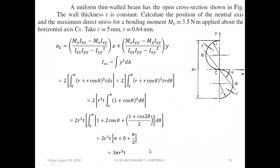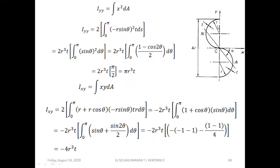Applying the limits gives Ixx = 3π·r³t. For Iyy, the horizontal distance x equals −r·sinθ for one half and +r·sinθ for the other half. Since squaring eliminates the sign, multiply by two. Integrating x²·t·ds with the appropriate limits gives Iyy = π·r³t.